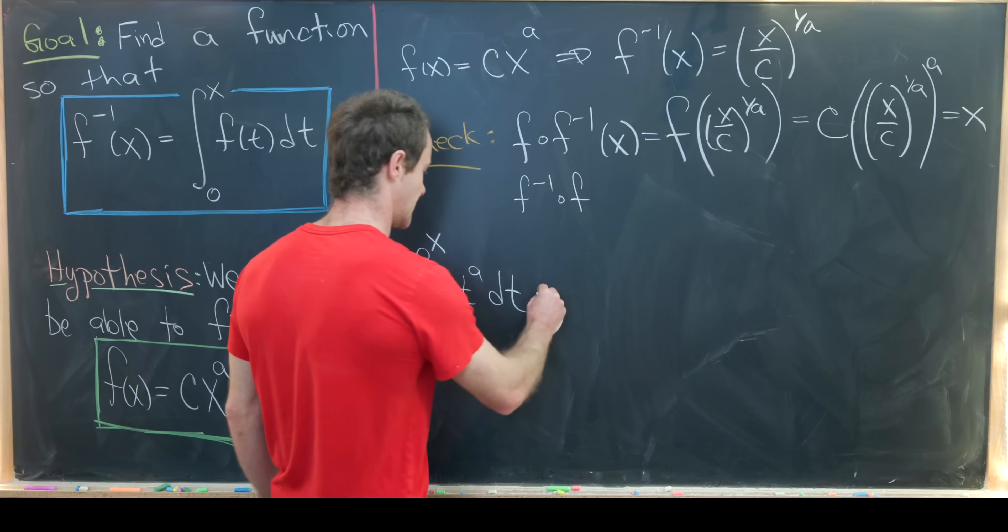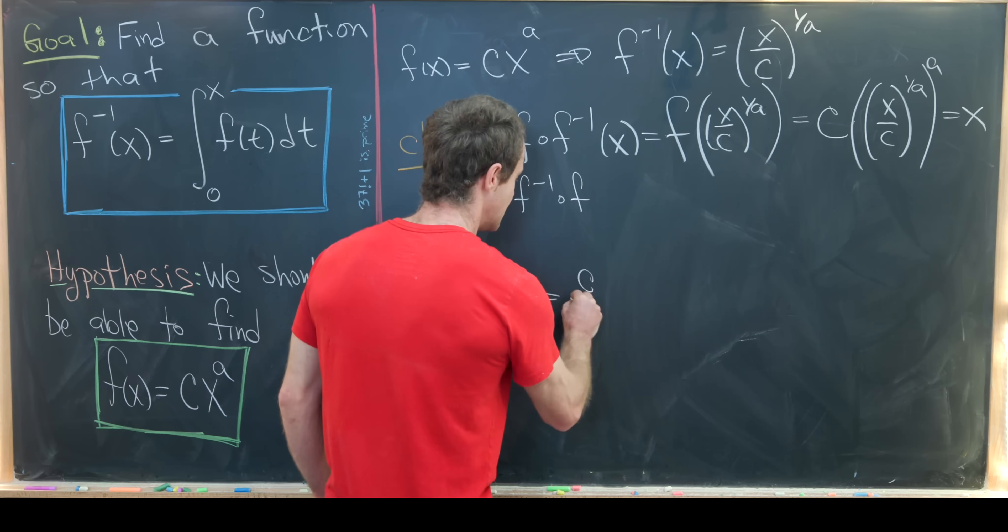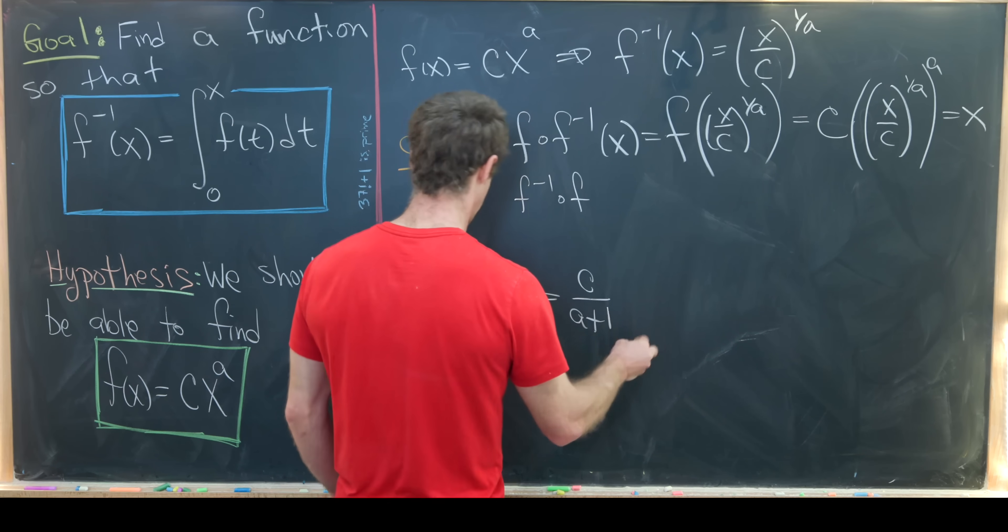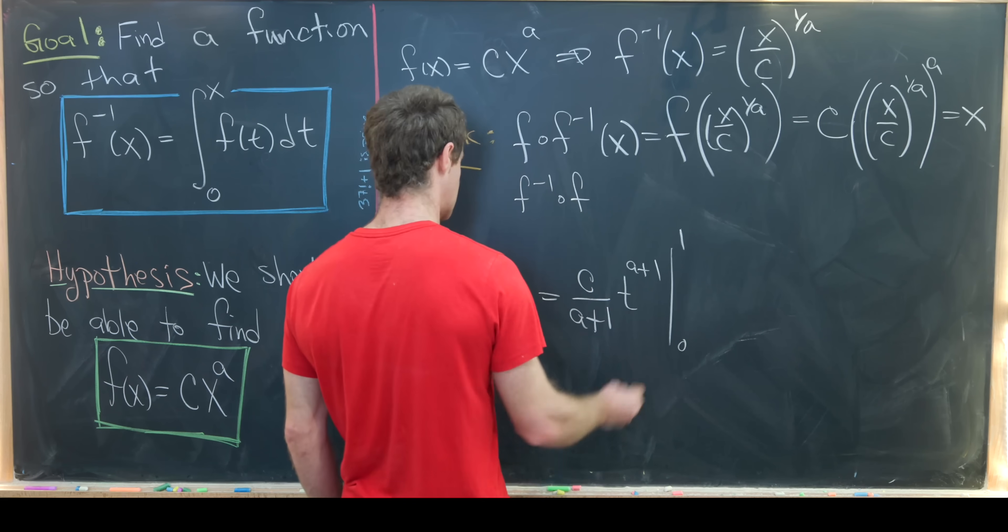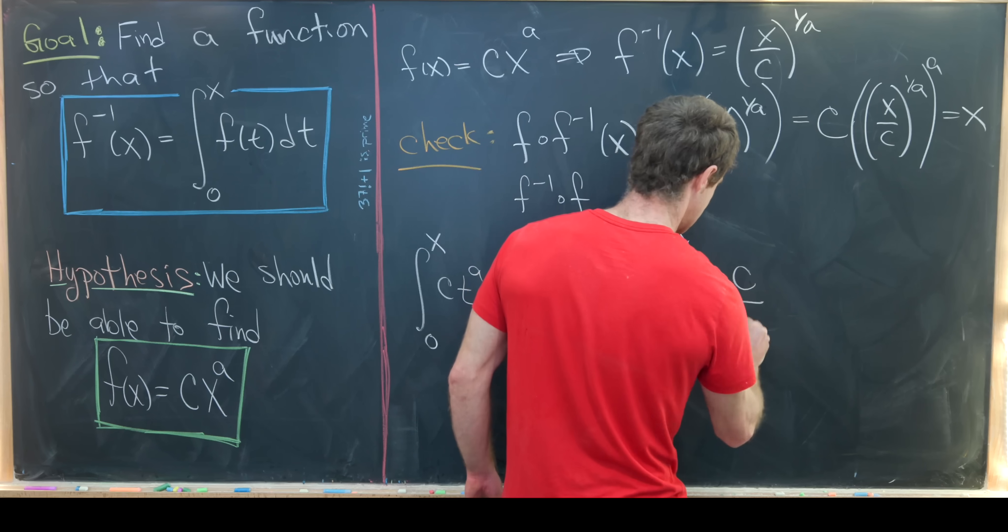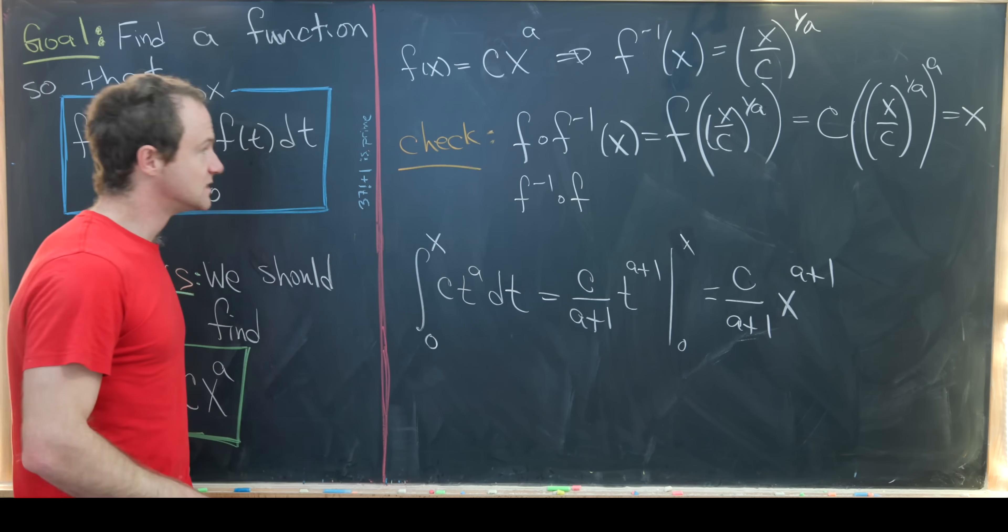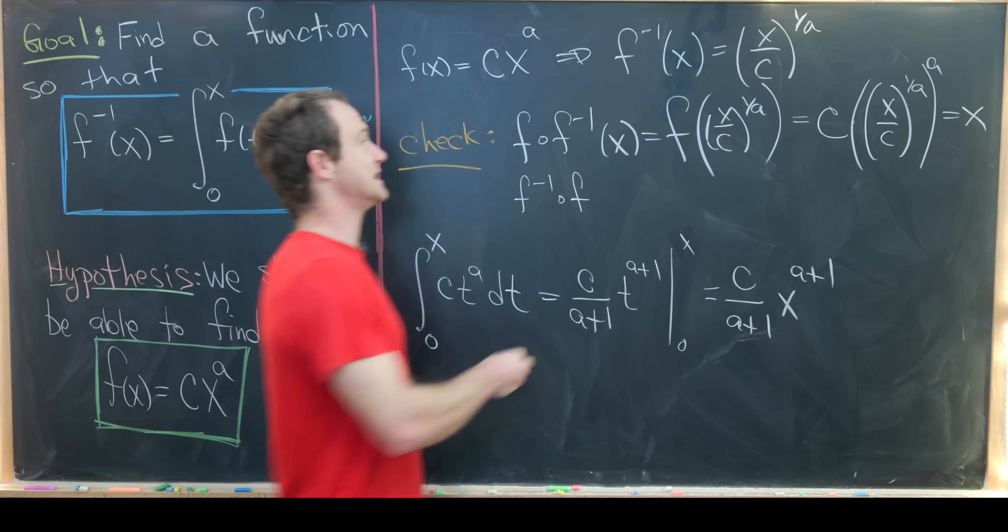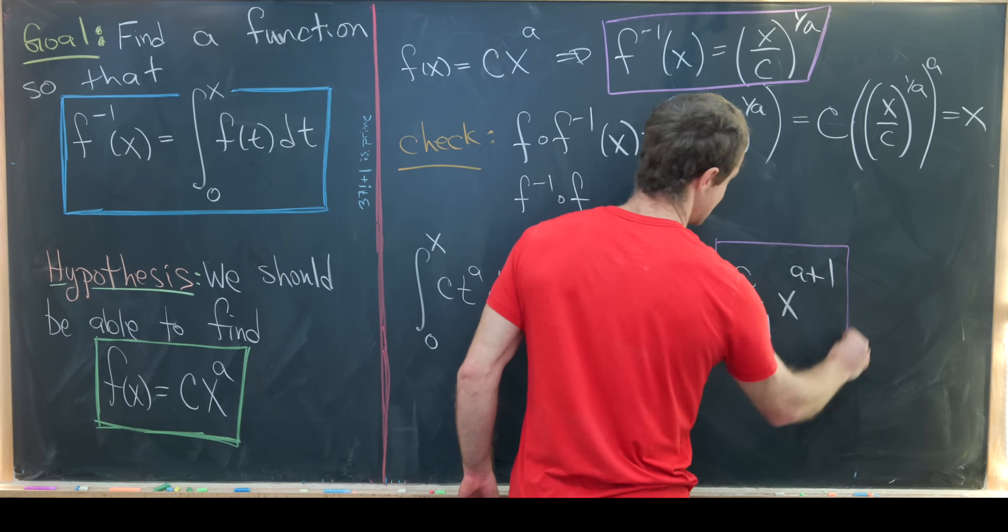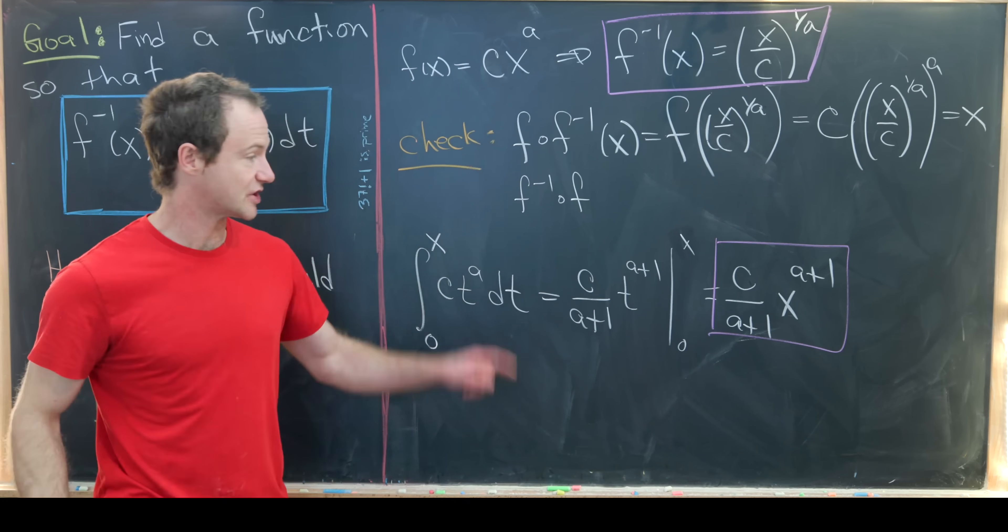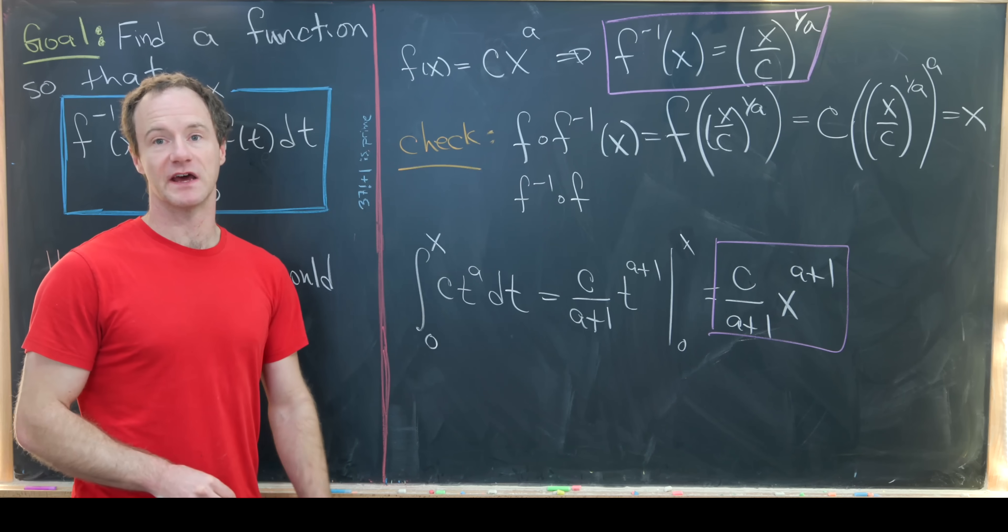We can use the power rule on this: increase the exponent by 1 and divide by the new exponent. That leaves us with c over (a+1) times t to the (a+1), evaluated from 0 to x. That gives us c over (a+1) times x to the (a+1). We want to impose the condition that f inverse is equal to the antiderivative of f—those two things in purple boxes are equal.